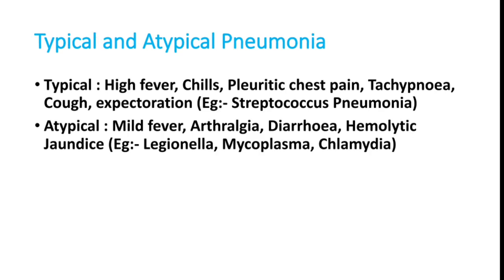To differentiate typical from atypical pneumonia: typical pneumonia presents with high degree fever, chills, pleuritic chest pain, tachypnea, cough, expectoration, and blood-tinged sputum. Atypical pneumonia presents with mild fever, arthralgias, diarrhea, hemolytic anemia, hyponatremia, and altered behavior. The key distinction is high-grade fever in typical versus mild fever in atypical pneumonia.